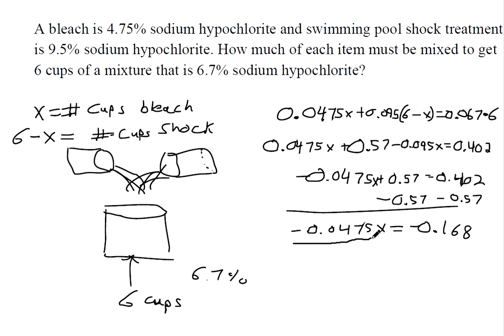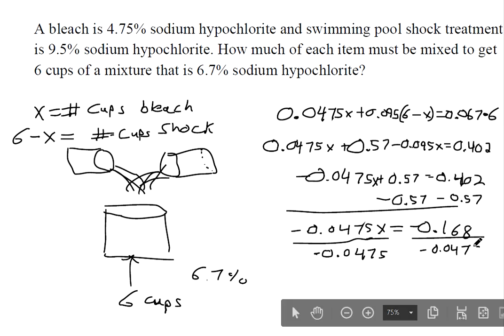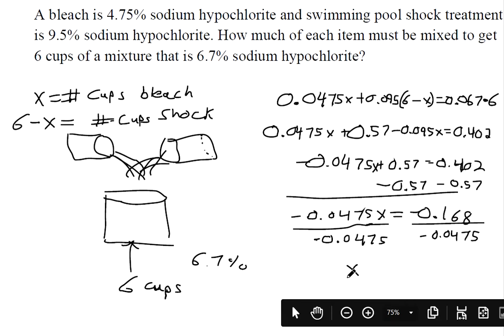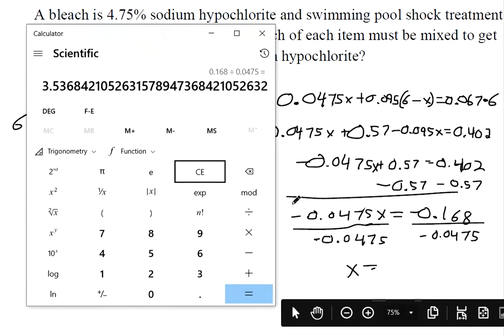I'm still trying to get x by itself, so let's divide both sides by negative 0.0475. X is 3.54 when we round.